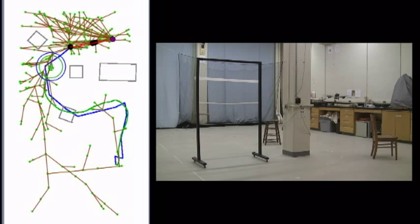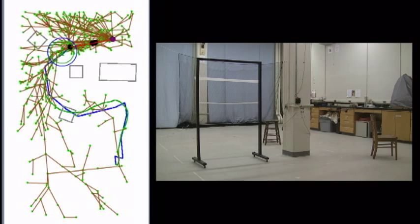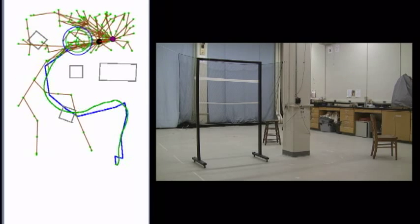The planner issues waypoints to the vehicle controller. The vehicle controller's job is to track these waypoints as accurately as possible. When the planner expects the vehicle to have arrived at the goal, it is up to the controller to cover the remaining distance.